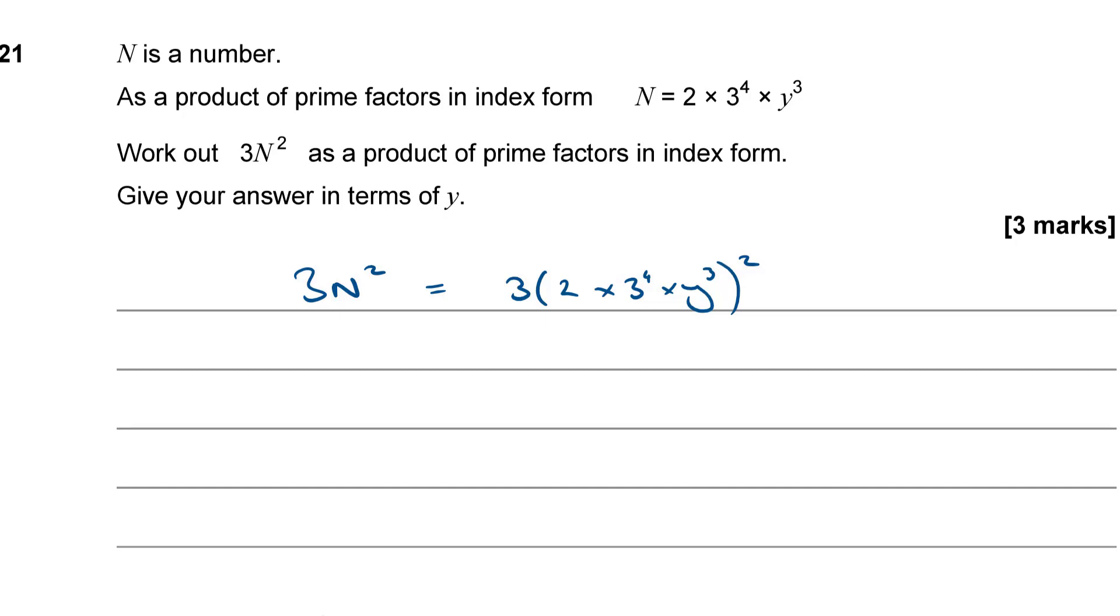Now, BIDMAS says indices come before multiplication. So, I'm going to deal with this index here first. And when I've got an index of an index like this with multiple things inside the brackets all multiplied together, I kind of have to distribute this to each of the terms in that product inside the brackets. So, I'm going to square each part of it separately. So, I'm going to square 2, I'm going to square 3 to the 4 and I'm going to square y cubed.